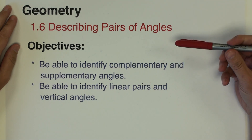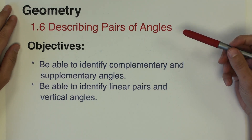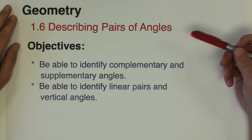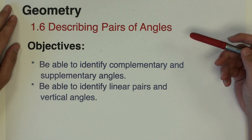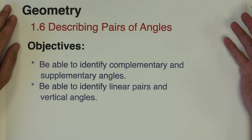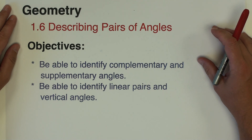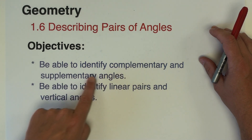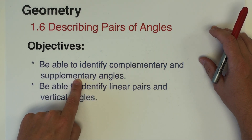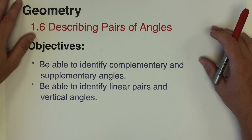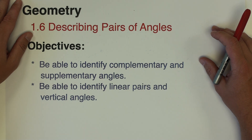Hello again and welcome to another math tutorial. This video is the final video in this first unit of geometry and we're going to look at angles, but this time we're going to focus on pairs of angles. There might be some terminology and vocabulary that you've heard before, but we're going to review it. We're going to begin with the difference between complementary and supplementary angles and then look at some other kinds of angle pairs we need to know how to identify.